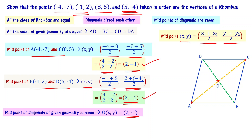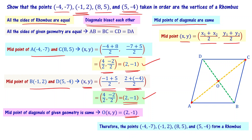Both criteria are met: all the sides are of equal length, and the midpoints of the diagonals are the same, which means the diagonals bisect each other. Therefore, we can say that the four points minus 4, minus 7 and minus 1, 2 and 8, 5 and 5, minus 4 form a rhombus. To solve this problem, you need to know the properties of a rhombus, the distance formula, and the midpoint formula.